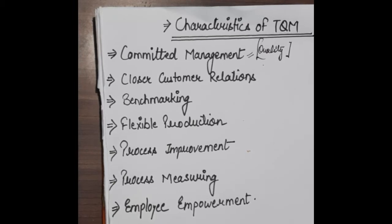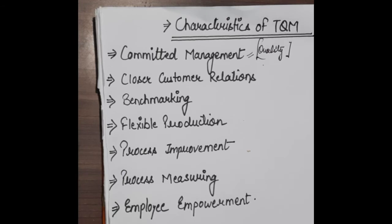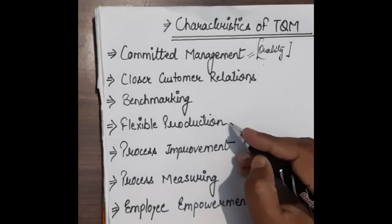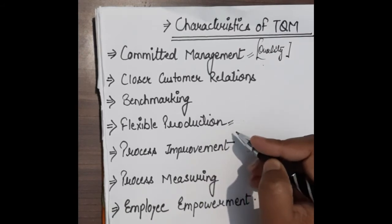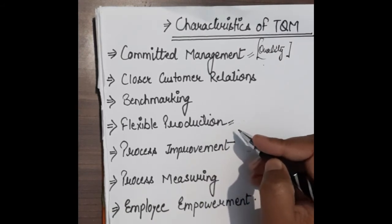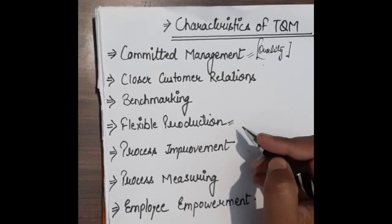All processes using quality-oriented products and services are standardized, which automatically sets a benchmark in society. Next is flexible production. In flexible production, we need to change the production process — we can change the plant setup, plant square, and plant layout so that you can change your production methods and techniques.